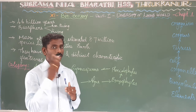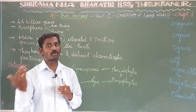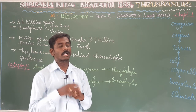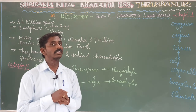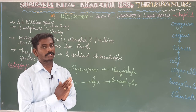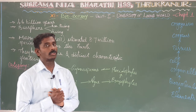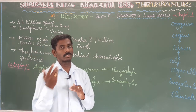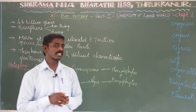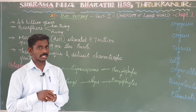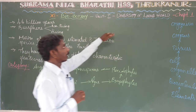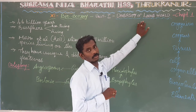In the first volume you are going to cover 3 units, and in the second volume you are going to cover 2 units. This is the first unit and first class. In the first unit: Diversity of Living World.